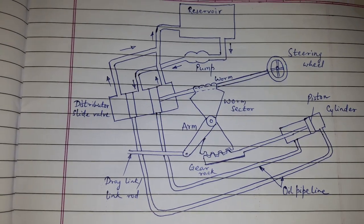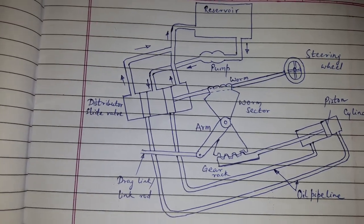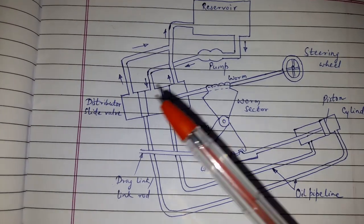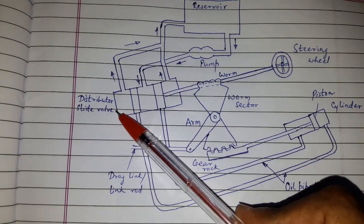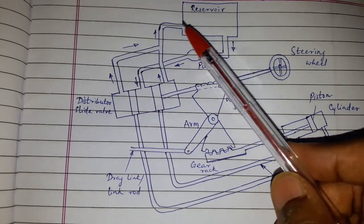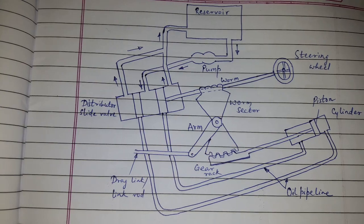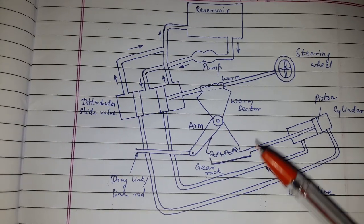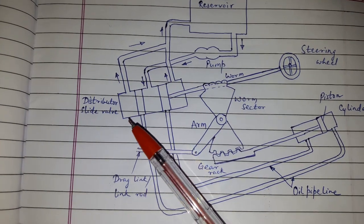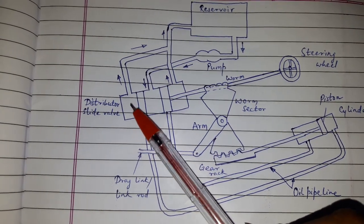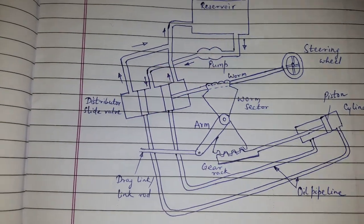Here we will be doing hydraulic power steering. The construction or the arrangement is as follows. It consists of a distributor slide valve. The distributor slide valve is connected to the reservoir and the cylinder, and it is actuated by the steering wheel.